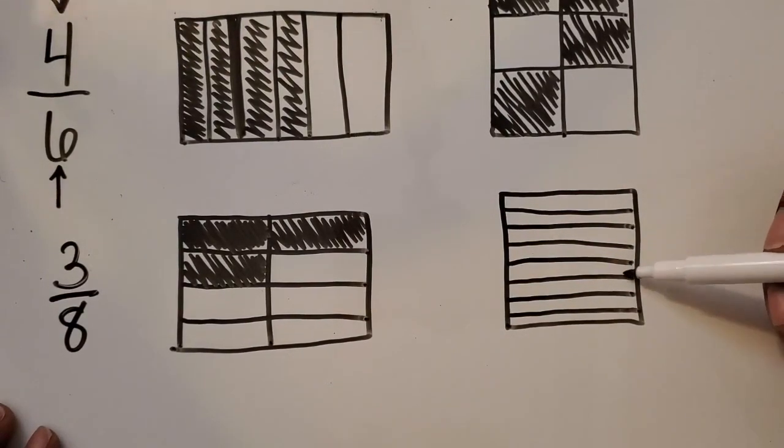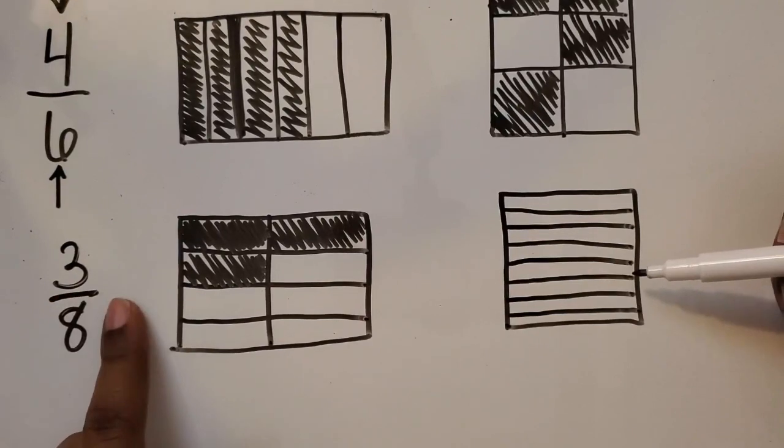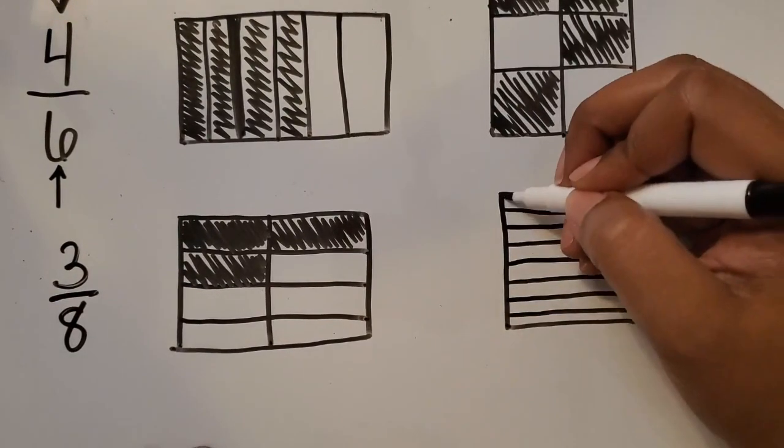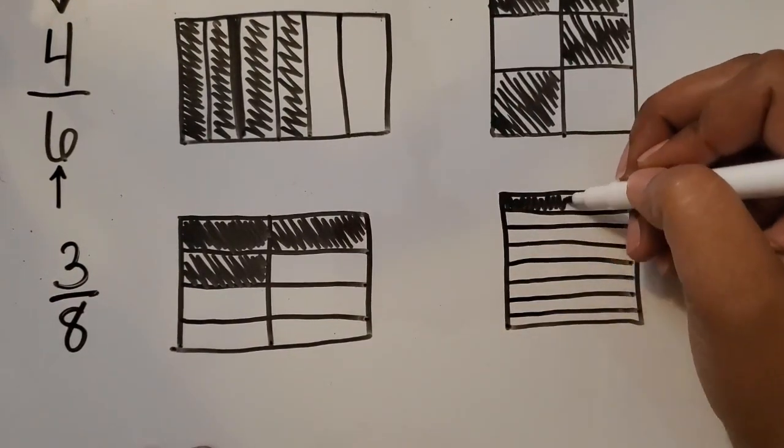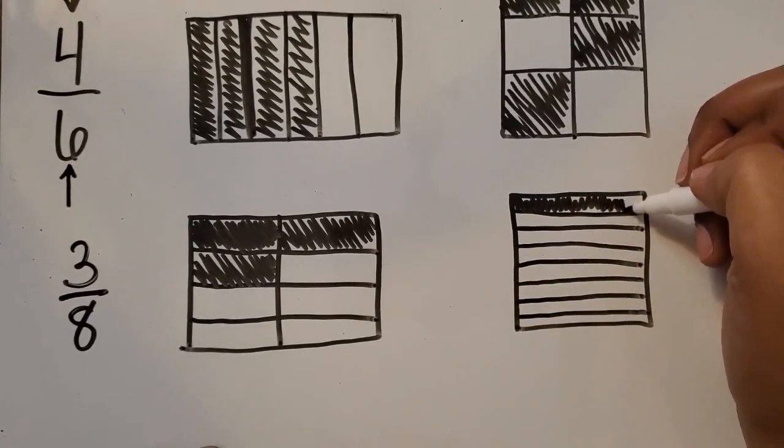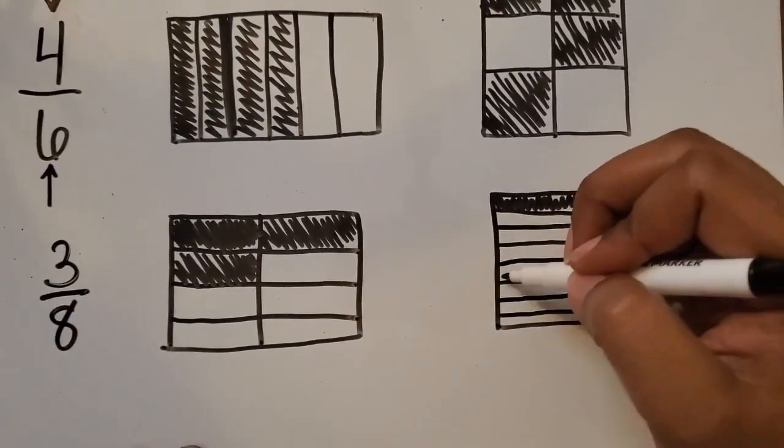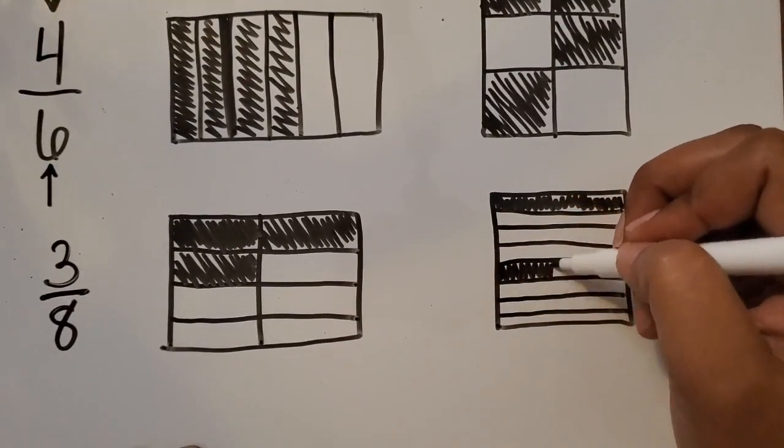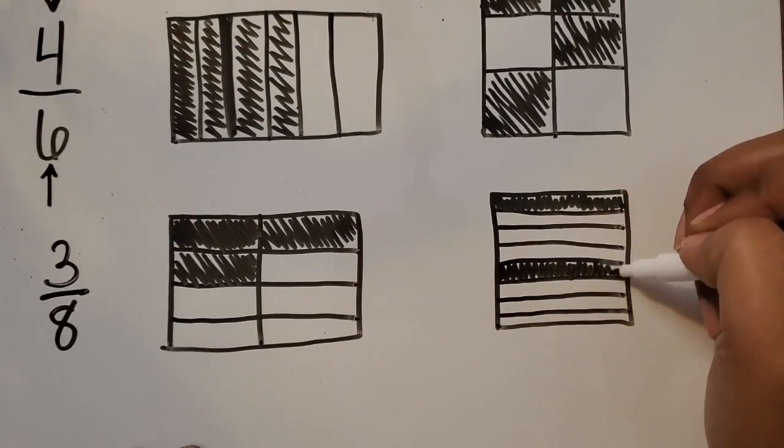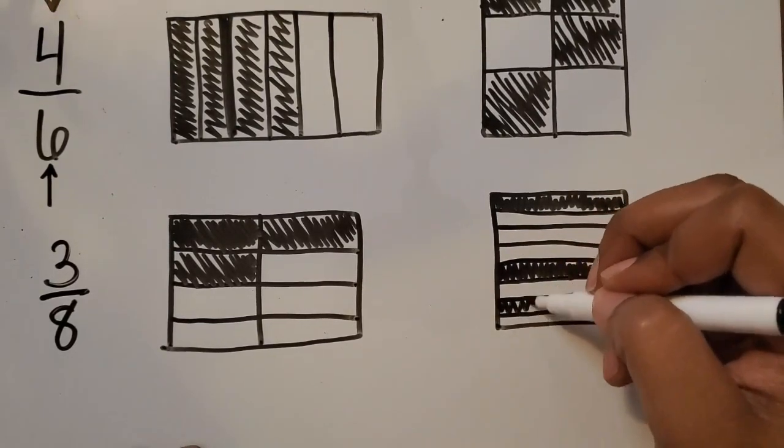Okay, 1, 2, 3, 4, 5, 6, 7, 8. We're going to shade in 3 of them. Again, they can be next to each other, or they don't have to be. We just know that out of the 8 equal parts, 3 are shaded in.